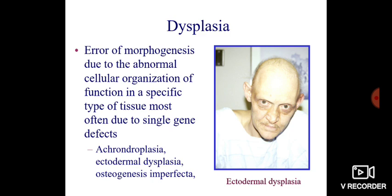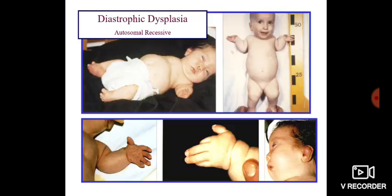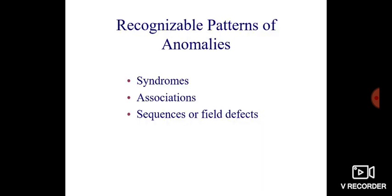Dysplasia can be due to ectodermal dysplasia, ectopic dysplasia, osteogenesis imperfecta, or diastrophic dysplasia.